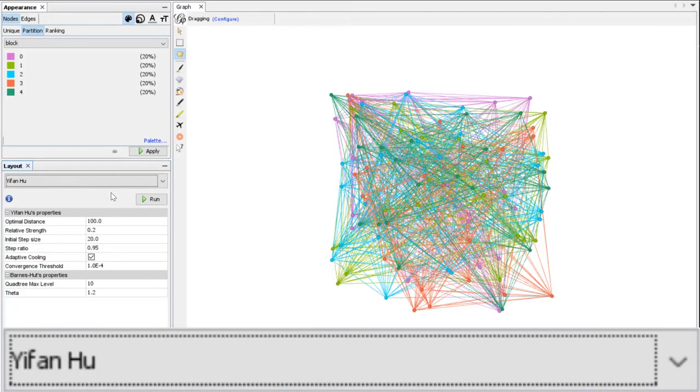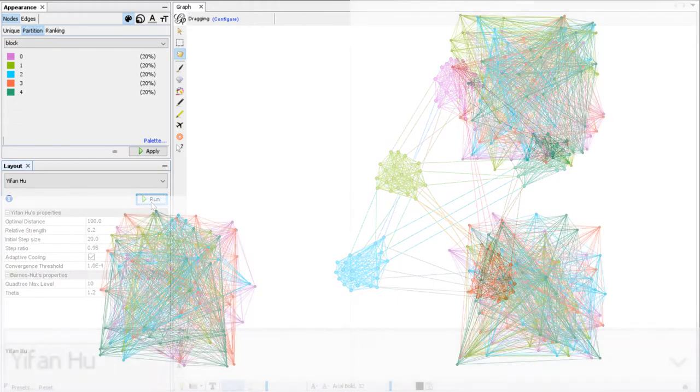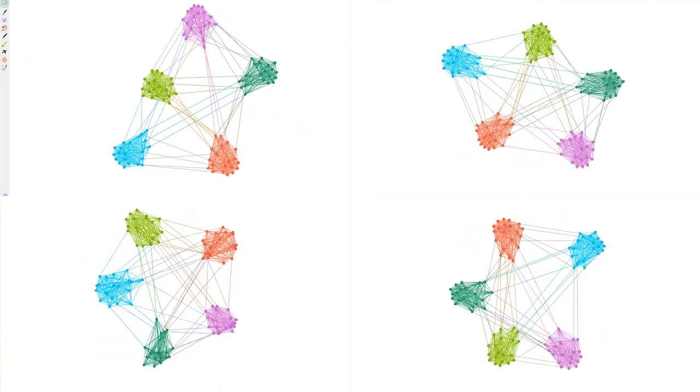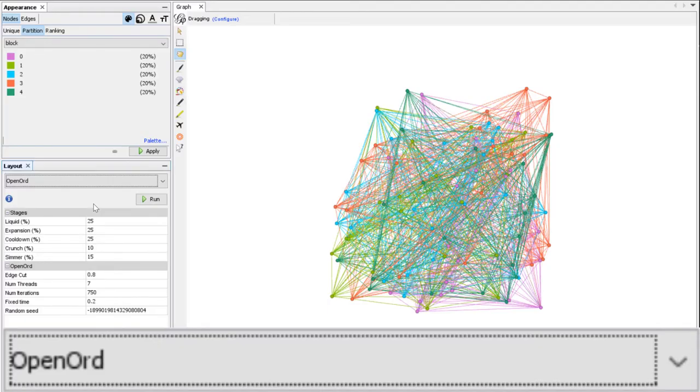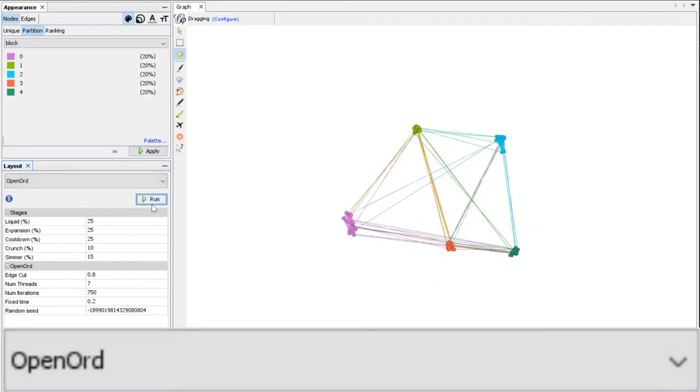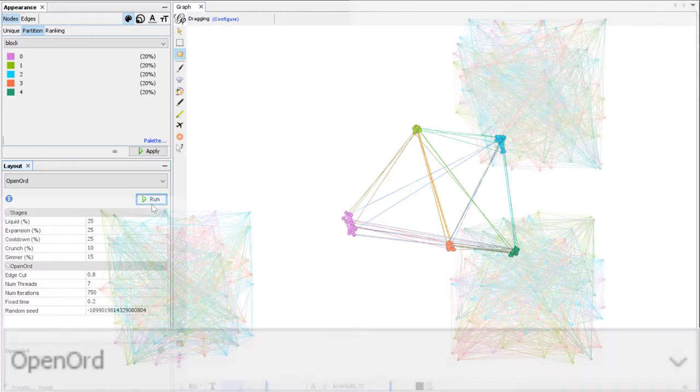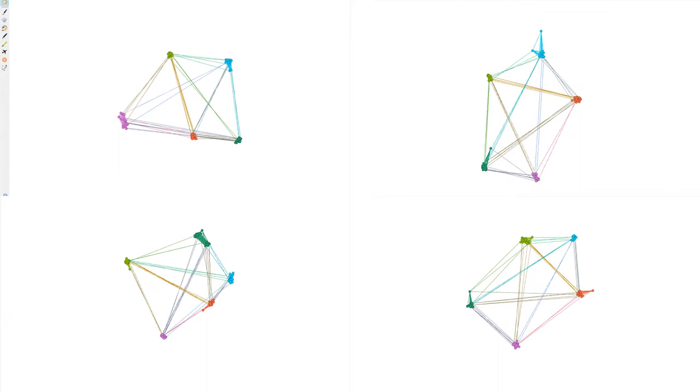Now let's see Yifan Hu. This one auto stops. This one has been designed for huge networks so it doesn't necessarily look pretty on small networks such as this one. It's interesting to note that this one has five different steps that work like five different layouts that are applied in a row. It also auto stops.